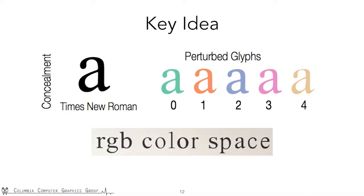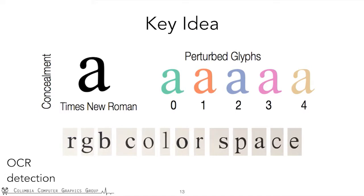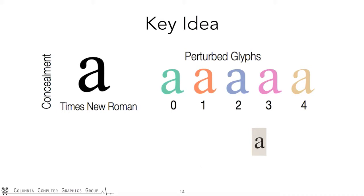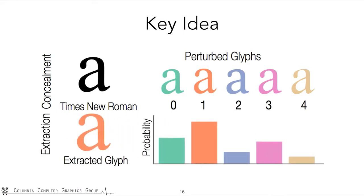More specifically, we first convert the document into an image. If the document is on paper, we take a photo of the document and use a standard optical character recognition algorithm, OCR, to extract single characters. The OCR algorithm can extract the bounding box of each character and recognize them. Then for each character, we use a machine-learning-based classifier to recognize the perturbed glyph. In this example, the extracted image has the highest probability associated with glyph 1, so the extracted image will be recognized as 1.